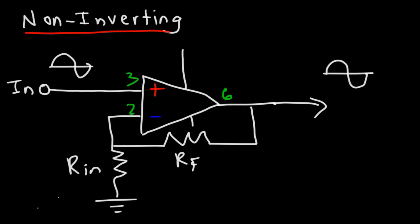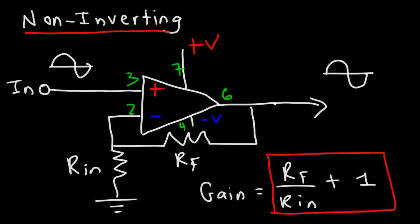Now let's not forget to put the supply voltages. So positive V and negative V for pins four and seven. Now, the closed loop voltage gain for this particular non-inverting amplifier is going to be, it's still the feedback resistor divided by the input resistance, but with an addition of one. So it's the same gain as the inverted amplifier, but adding one to it as well. So that's how you can calculate the gain for this particular circuit.